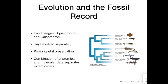Having cartilage instead of bone, shark skeletons preserve poorly, so fossil data can be unreliable for establishing evolutionary relationships. For extant taxa, a combination of anatomical and molecular information is used to produce trees of evolutionary relationships, called phylogenetic trees. We will now go over the seven extant orders of sharks, with some examples of what sets them apart from each other.